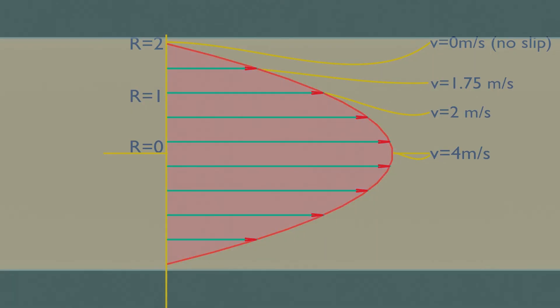The velocity profile in the fully developed region is parabolic in laminar flow and much flatter, or fuller, in turbulent flow due to eddy motion and more vigorous mixing in the radial direction.